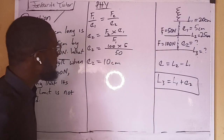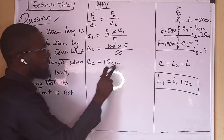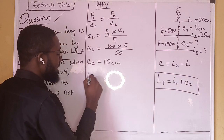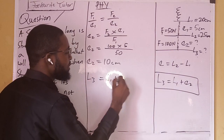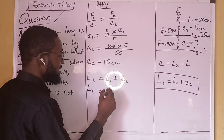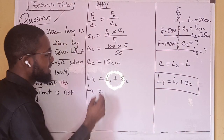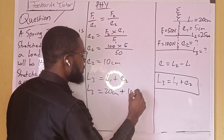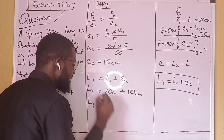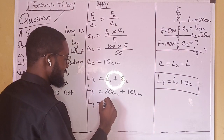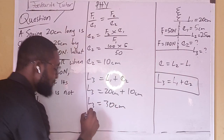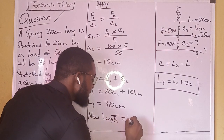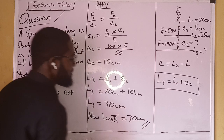Extension two is 10 centimeters. Now we go to the new length: length three equals length one plus extension two. Length one is 20 centimeters, plus extension two which is 10 centimeters, gives us length three equal to 30 centimeters. So the new length is 30 centimeters.